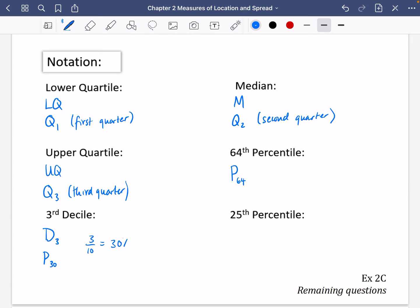The 25th percentile: well, we could say it's P₂₅, but actually we know something about the 25th percentile. The 25th percentile is the same as the lower quartile or Q₁ because it's just 25% of the way along the data.